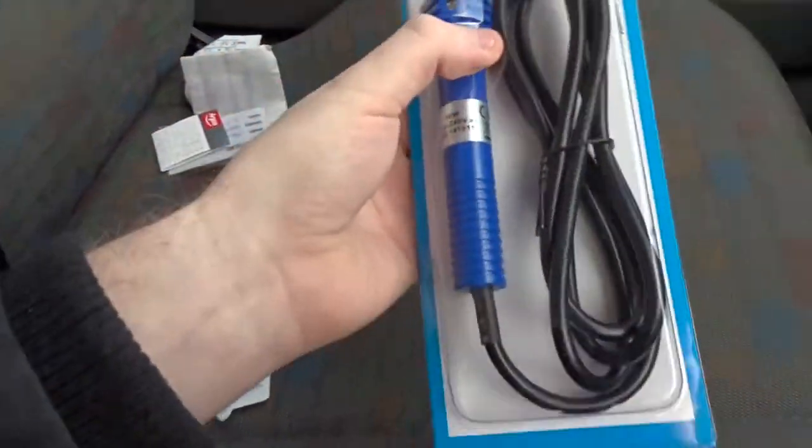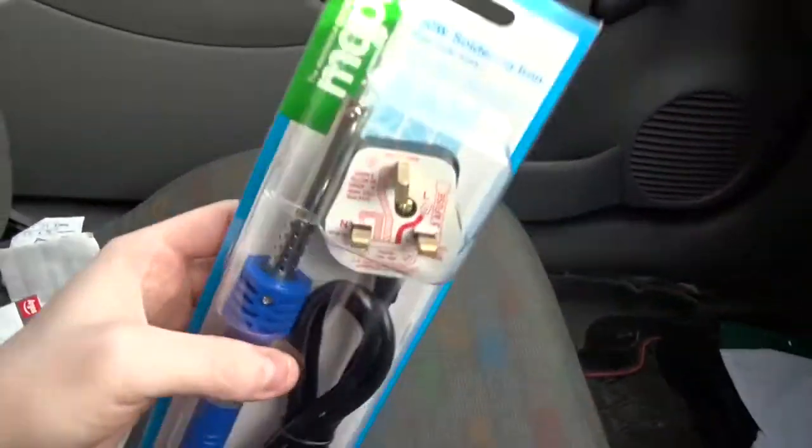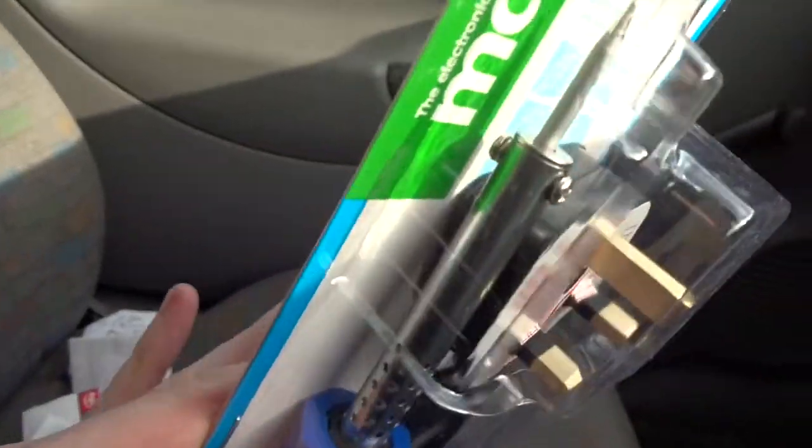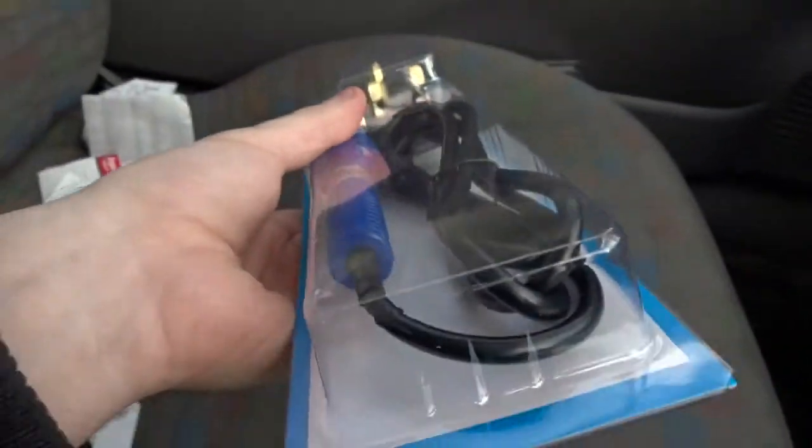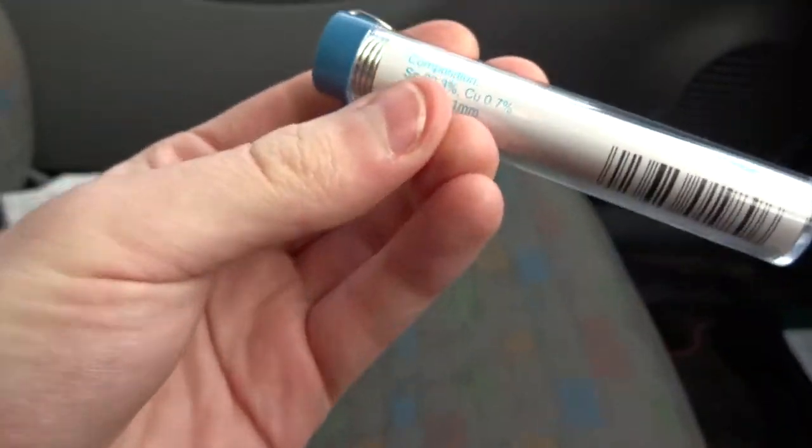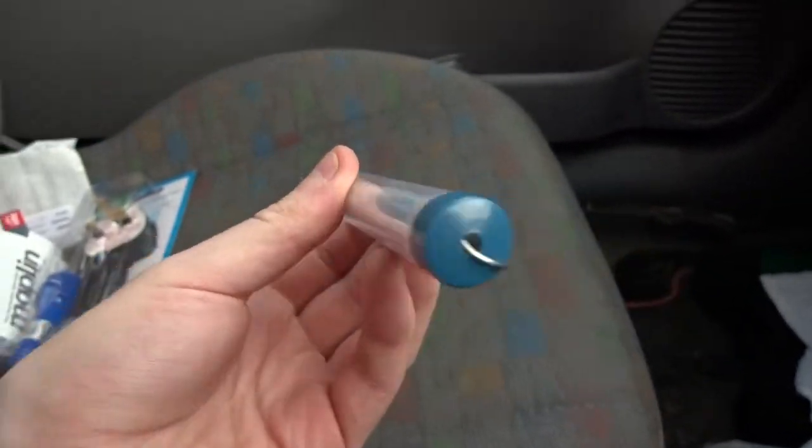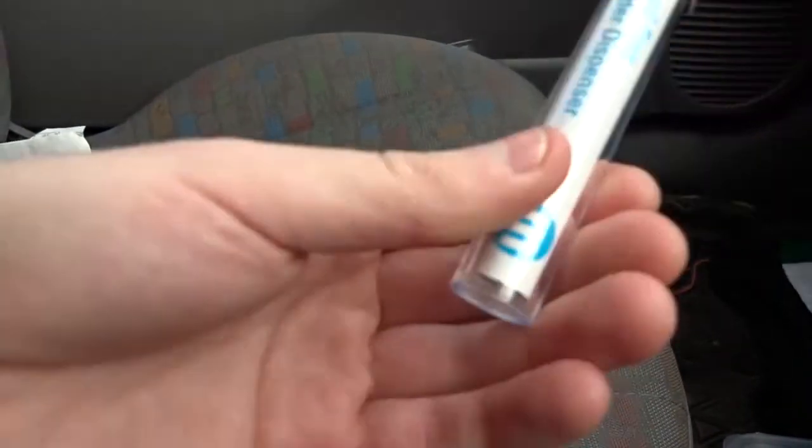Mission accomplished. We have a Maplin soldering iron. 30 watt soldering iron, pretty much standard. Small tip on there, which is great. And we have flux solder as well. So it's already pre-fluxed, which is going to be great.